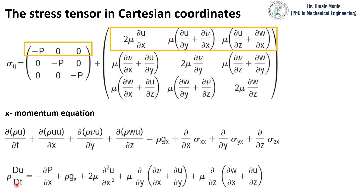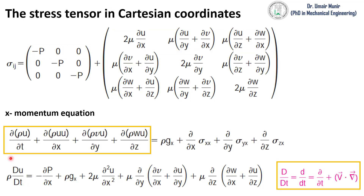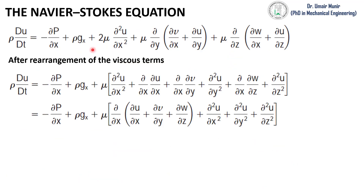In this equation, capital DU over capital Dt is the material derivative, which is defined by the divergence of velocity with respect to time, x, y, and z. This highlighted region of the x-momentum equation is equal to this material derivative. So we have the x-momentum equation in this form. After some rearrangement of the viscous term, we will get the equation in this form, where we have rearranged the viscous term only.